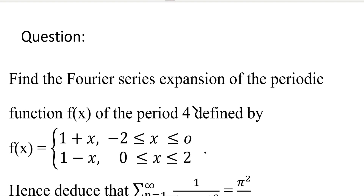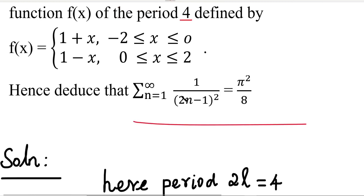Hi students. In the previous video, one function with limits as numbers was introduced. Now we will see how to find its Fourier series. The question is: find the Fourier series expansion of the periodic function f(x) with period 4, defined as f(x) = 1+x when x is between -2 and 0, and f(x) = 1-x when x is between 0 and 2. Hence deduce that the summation of 1/(2n-1)² from n=1 to infinity equals π²/8.